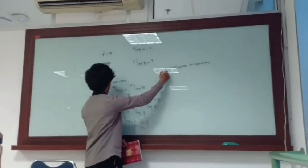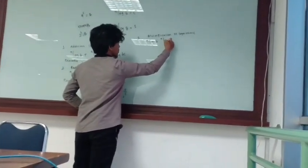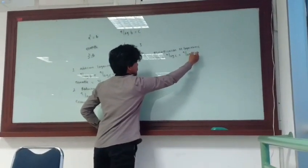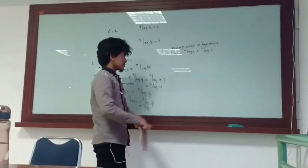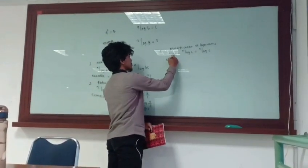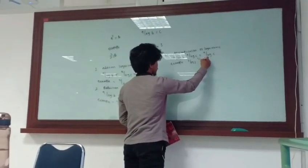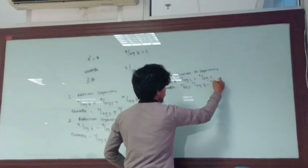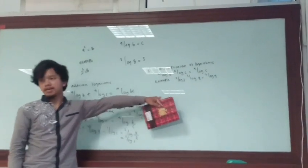Multiplication of logarithmic. I want to write the model: A log B times B log C equals A log C. So B and B cross out. Example: 2 log 3 times 3 log 4 equals 2 log 4. This is an example of multiplication of logarithmic.